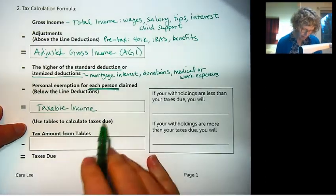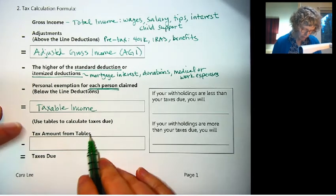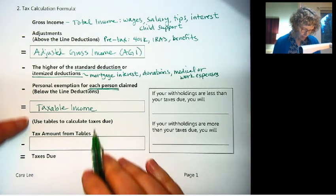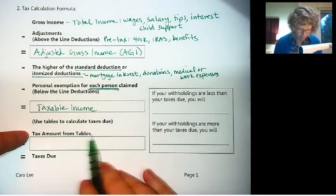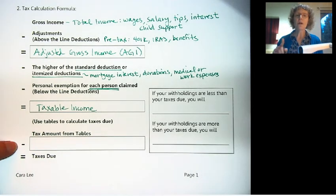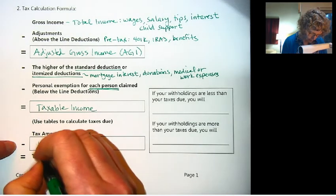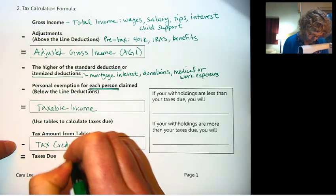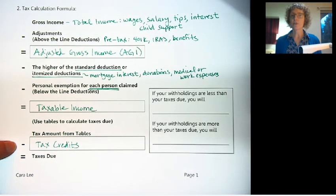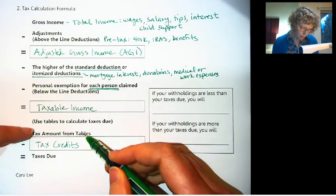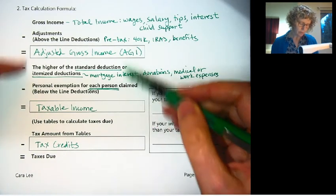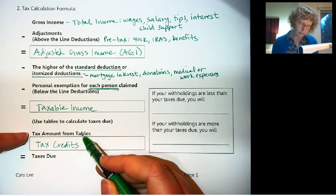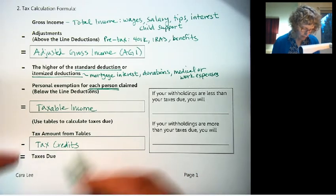So once you find the amount of tax, that's the tax amount from the tables. Then there's one more thing that you might get to subtract, and those are called tax credits. It's really great to get a tax credit because that directly reduces the taxes you have to pay. The deductions are great, they save you a percentage, but this is dollar for dollar. This directly reduces the tax you have to pay, and that equals your taxes due.